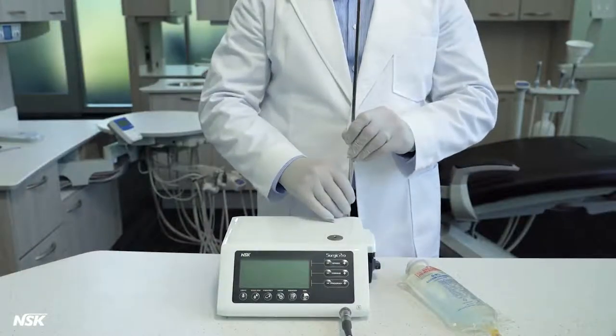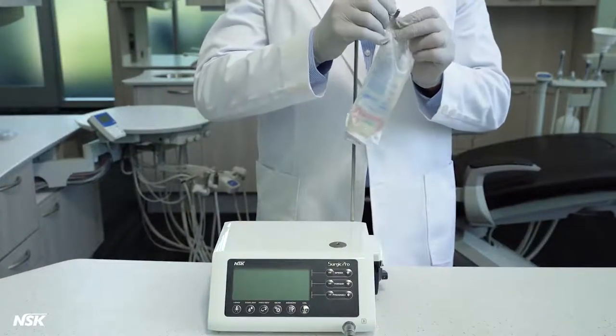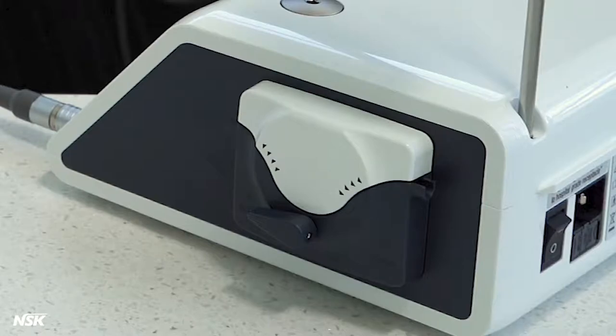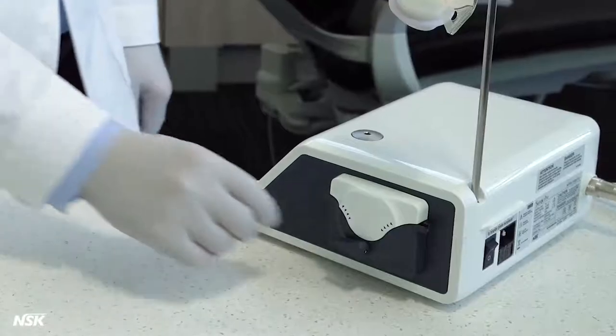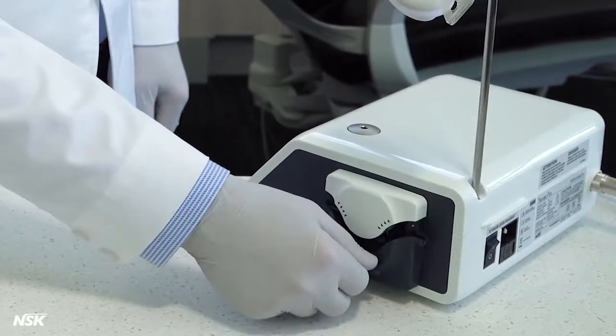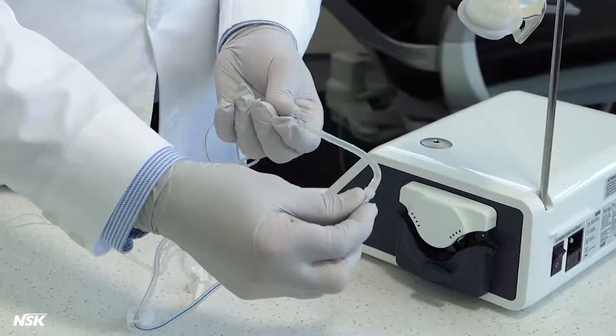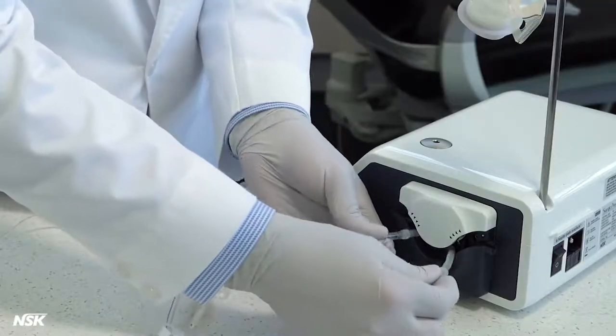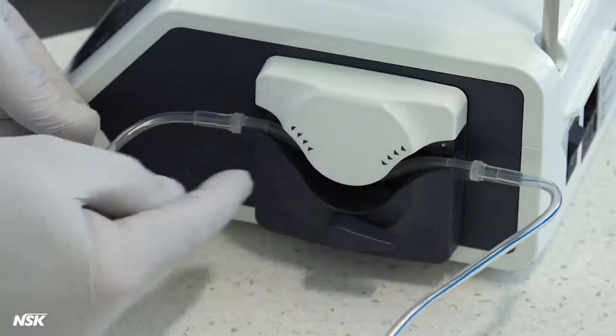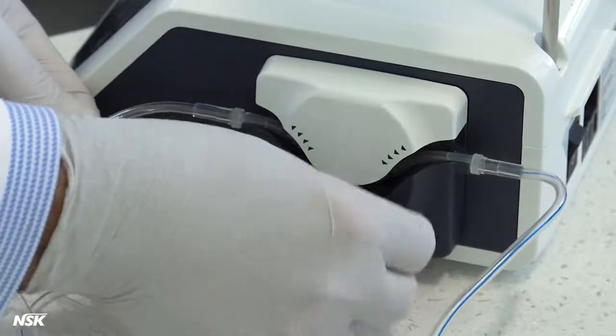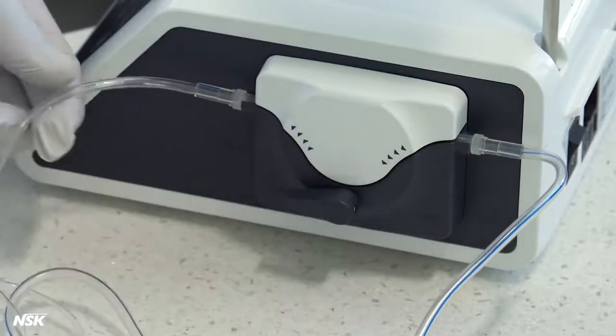Next, mount the coolant solution hanger post and hang the saline bag. To install the irrigation tube, be sure the lever of the pump is turned to open and the needle end of the tubing is facing toward the back of the unit. Then bend the tubing and insert inside the spindle. Make sure the two stoppers on the tubing stay outside the pump. Then turn the lever back to close.